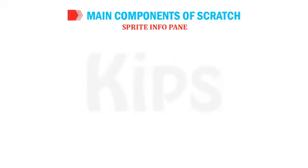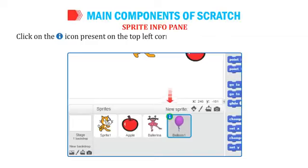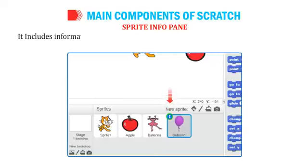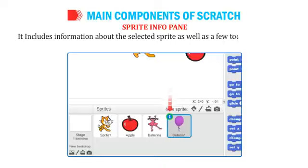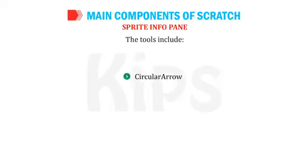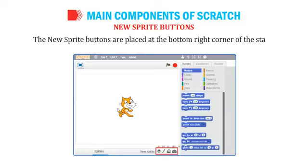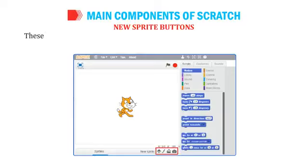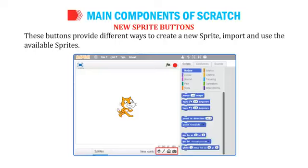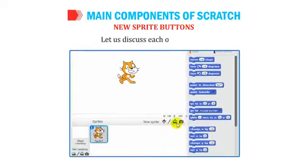The Sprite Info Pane appears when you click the icon on the top left corner of a sprite thumbnail. It includes information about the selected sprite and a few tools for manipulating it, including Circular Arrow, Linear Arrow, and Disable Rotation. The New Sprite Buttons are placed at the bottom right corner of the stage and provide different ways to create or import a new sprite.